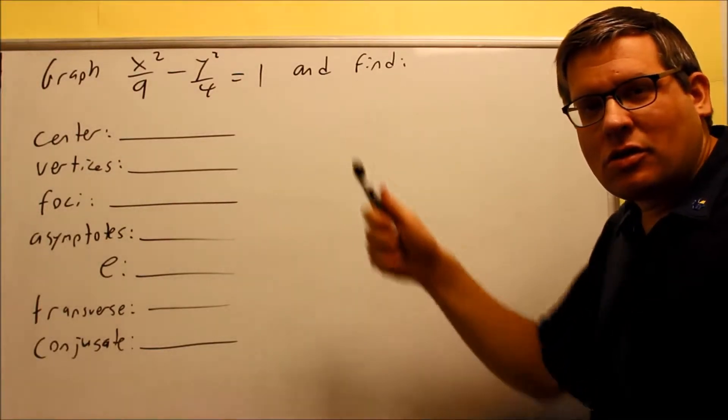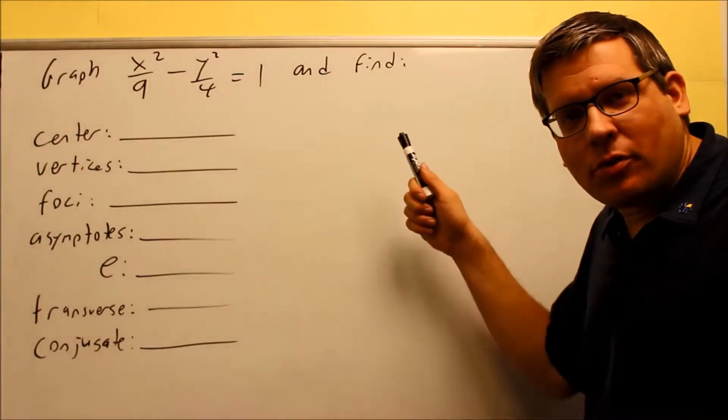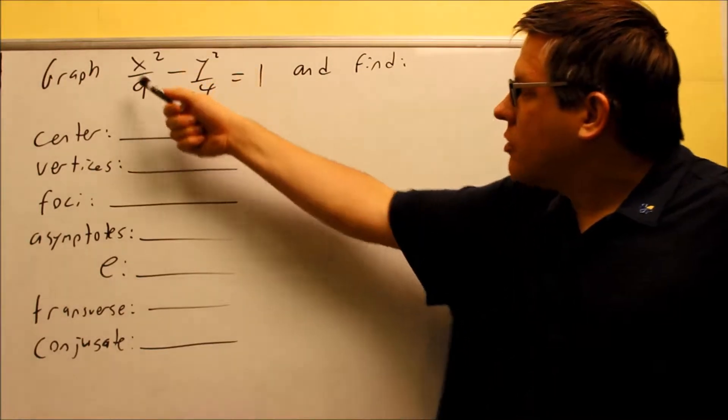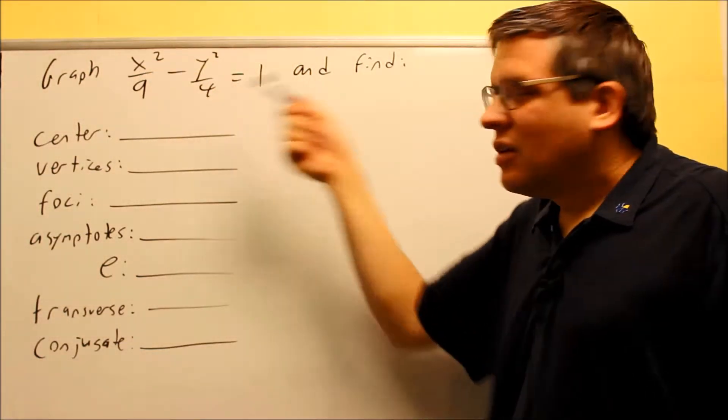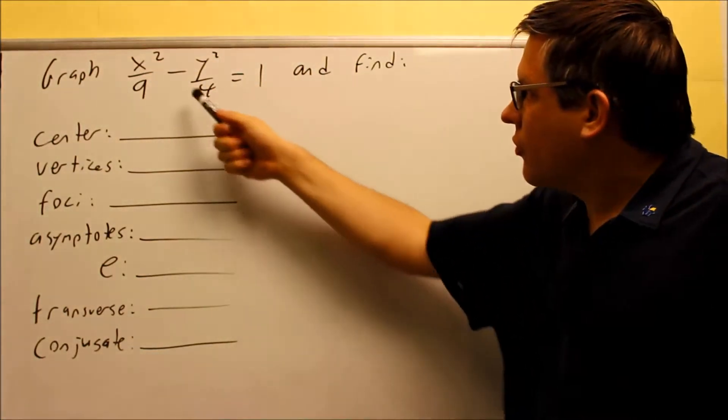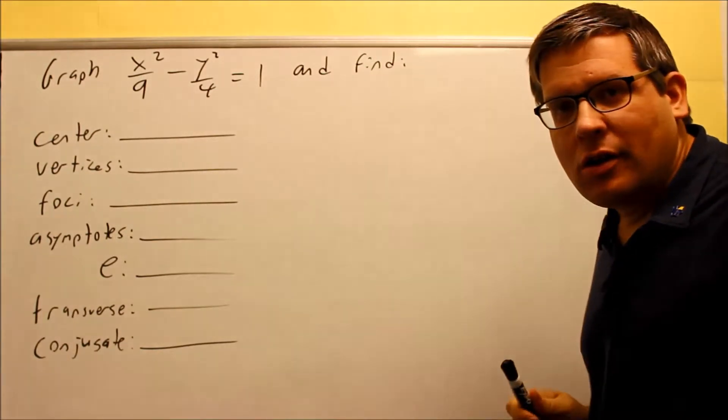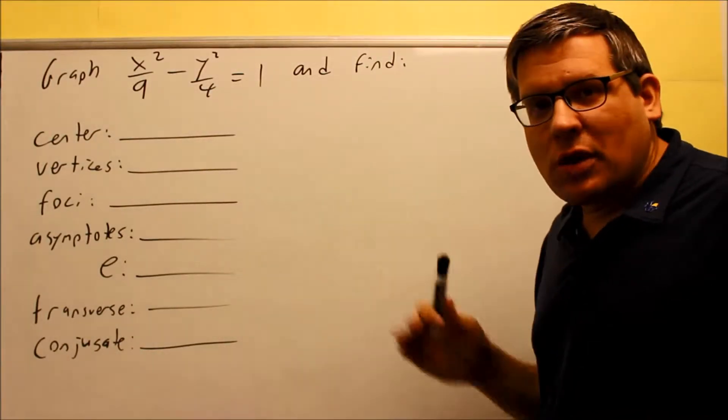This section is talking about how to graph hyperbolas. Hyperbolas have this kind of format - they look like ellipses. The difference is we got a minus sign there instead of a plus sign.